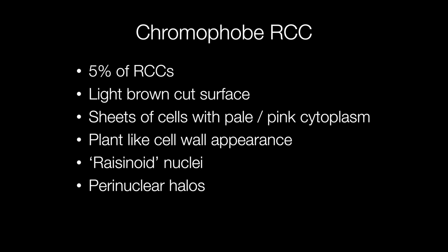Chromophobe renal cell carcinomas account for approximately 5% of all renal cell carcinomas. Typically they have a light brown cut surface and histologically are composed of sheets of cells with pale or pink cytoplasm. The cells have a very prominent outline producing a cell wall type appearance, and the nuclei are surrounded by a clear perinuclear halo. The nuclei themselves are rather irregular, producing an appearance similar to raisins — hence the term raisinoid nuclei.